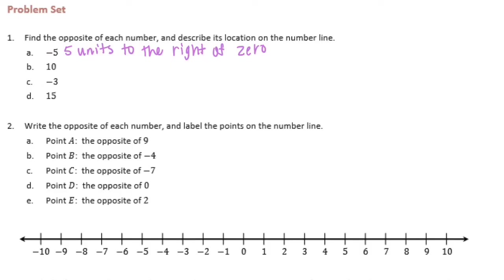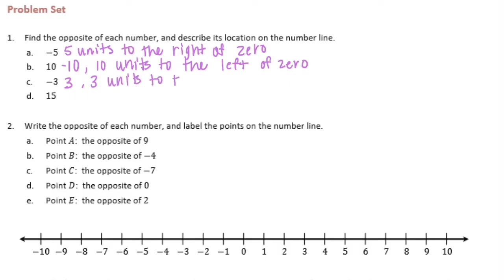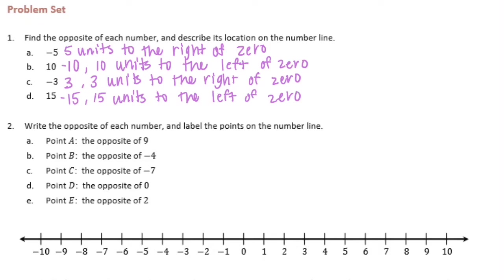The opposite of 10 is negative 10, and negative 10 would be 10 units to the left of 0. The opposite of negative 3 is 3, which would be 3 units to the right of 0. The opposite of 15 is negative 15, which would be 15 units to the left of 0.